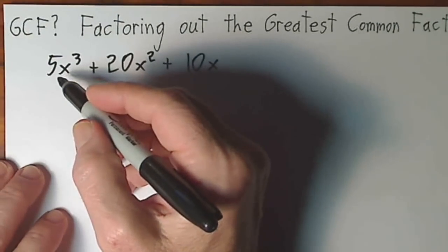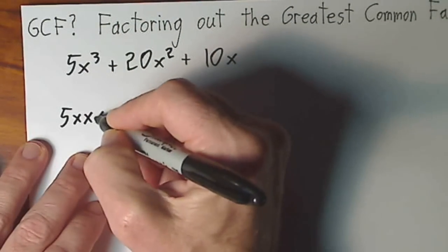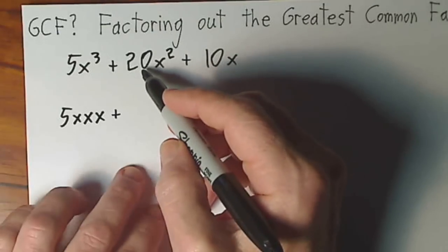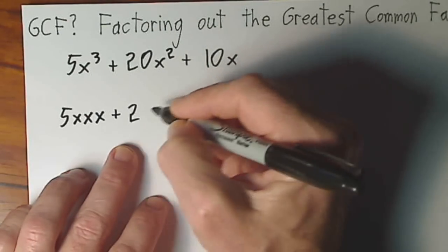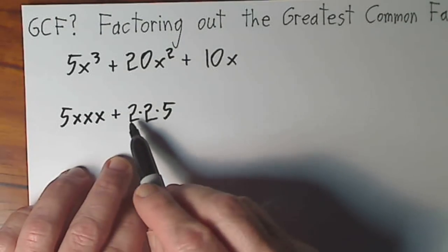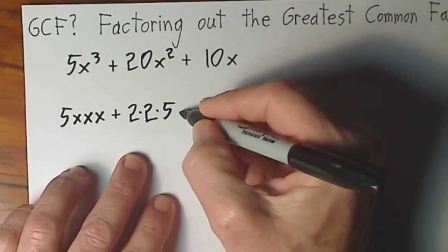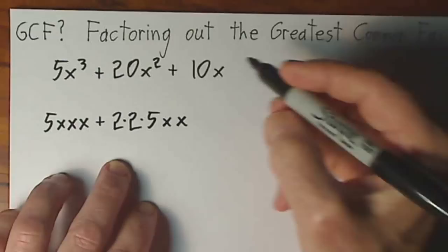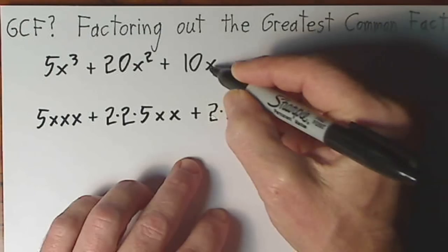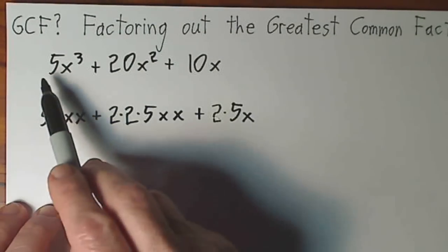5x to the third can be written as 5 times x times x times x. Plus 20x squared. 20 can be written as 2 times 2 times 5. So 2 times 2 times 5 is the factored form of 20. x squared can be written as x times x. And then plus 10x I can write as 2 times 5x. All I've done on this line is write the factored form of everything up here.